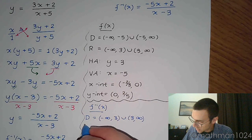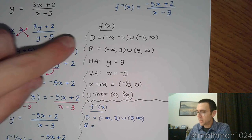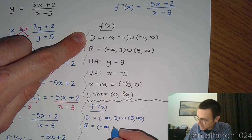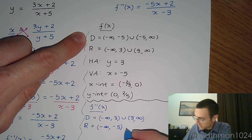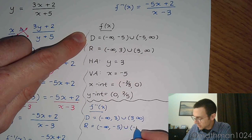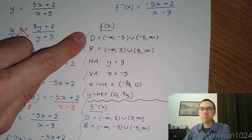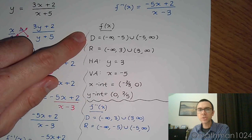His range is going to be the original function's domain. So from negative infinity to -5, union, -5 to infinity.